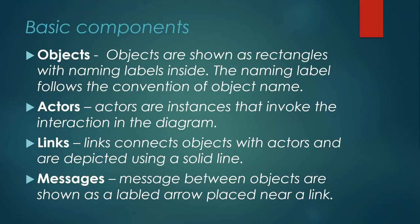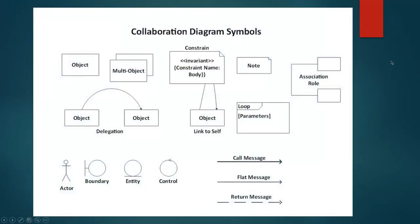There are other components, but those four are the ones used most of the time in collaboration diagrams. Next, we have the diagram notations or symbols. We can draw single objects, multiple objects, actor notations, as well as boundary, entity, and control symbols. We also have notations for loops, call messages, flat messages, and return messages — these are the main notations used in collaboration diagrams.